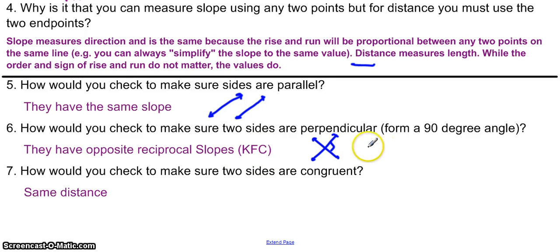For example, the slope of 3 fifths, the opposite reciprocal slope would be negative 5 thirds, or something like a slope of 2, the opposite reciprocal slope would be negative 1 half, because we can always put that 2 over 1.